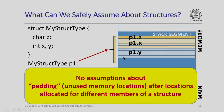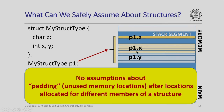We are also not going to make any assumptions about whether there are paddings or gaps or unused memory locations after the locations allocated for different members of a structure. For example, we will not assume that there is no gap or unused memory location between the location allocated for p1.z and the first location allocated for p1.x. Similarly, we will not assume there is no gap or padding between the last location allocated for p1.x and the first location allocated for p1.y.